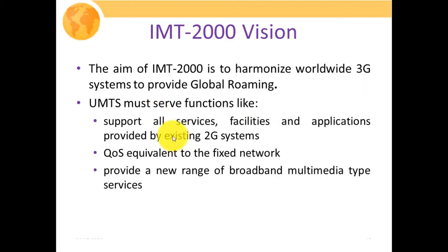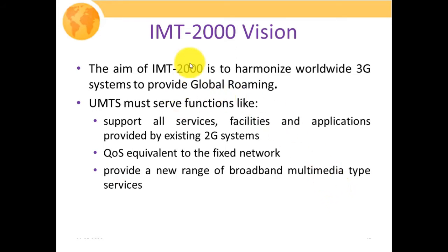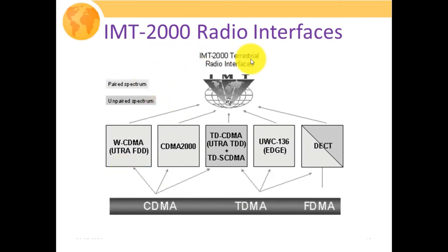UMTS must support all services, facilities, and applications provided by existing 2G systems, ensuring backward compatibility. Quality of service must be equivalent to the fixed network. The IMT 2000 vision states that a system fulfilling IMT 2000 is called UMTS — the implemented version of IMT 2000 — where IMT 2000 was the vision and UMTS was the implementation. UMTS must also provide a new range of broadband multimedia services.